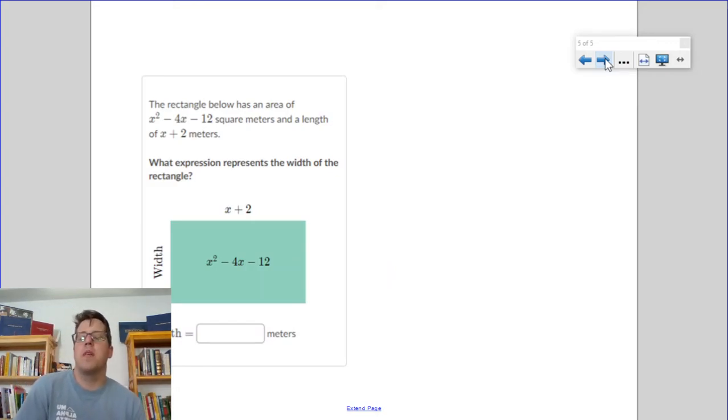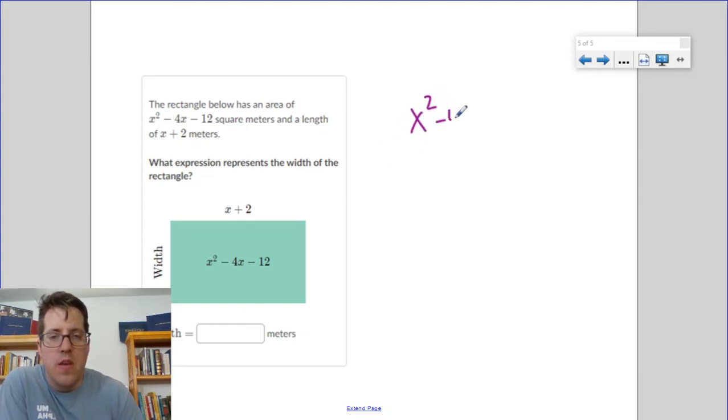There's a question on Khan Academy like this where they give you a length and they ask you to find a width. So what they're telling you is that if you want to factor or break apart this trinomial, one of the binomials is going to be x plus 2.